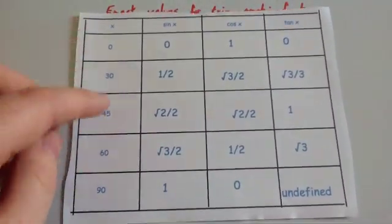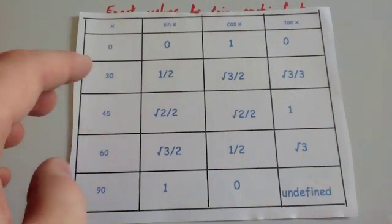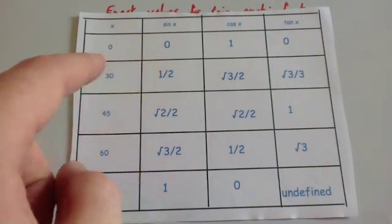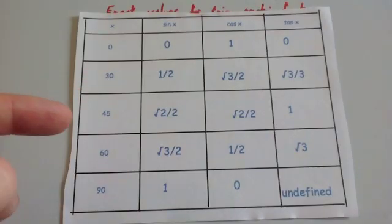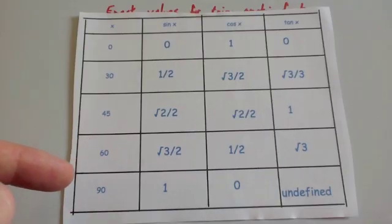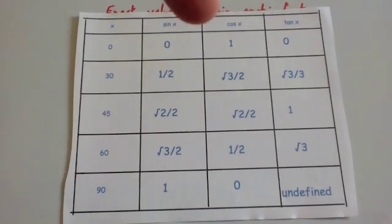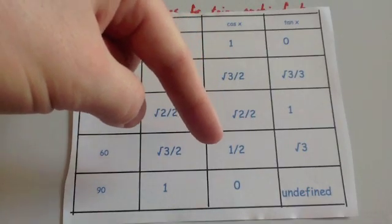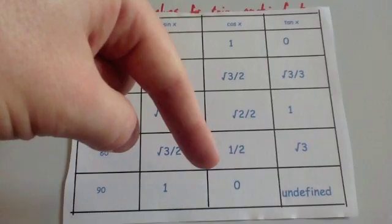In degrees: sine of 0 is 0, sine of 30 is a half, sine of 45 is root 2 over 2, sine of 60 is root 3 over 2, and sine of 90 is 1. Cos of 0 is 1, cos of 30 is root 3 over 2, cos of 45 is root 2 over 2, cos of 60 is a half, and cos of 90 is 0.